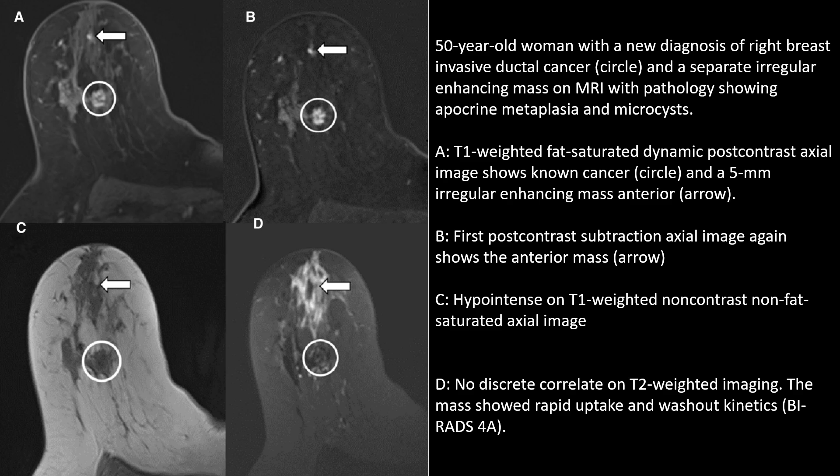This is a case of a 50-year-old woman with a new diagnosis of right breast invasive ductal carcinoma as shown in the circle. A separate irregular enhancing mass is seen on MRI, and the pathology showed apocrine metaplasia and microcysts. In panel A, the T1-weighted fat-saturated dynamic post-contrast axial image shows the known cancer in the circle. A 5-millimeter irregular enhancing mass is seen. On the first post-contrast subtraction image this mass is seen. On the T1-weighted non-contrast non-fat-saturated axial image, it is hypo-intense. There is no discrete correlate on the T2-weighted images. This mass showed rapid uptake and washout, and biopsy was performed.